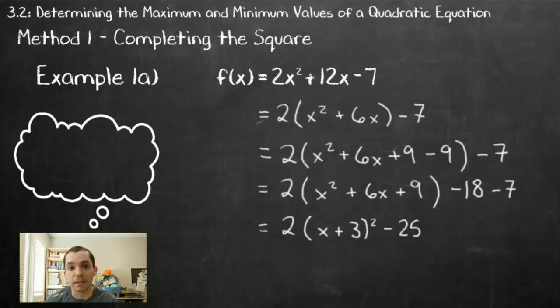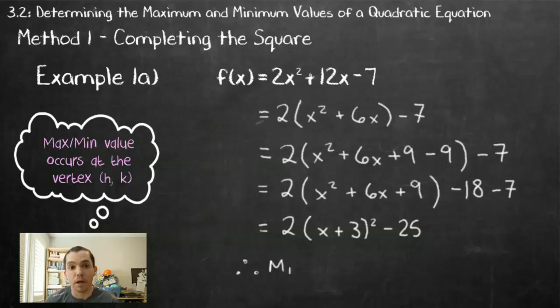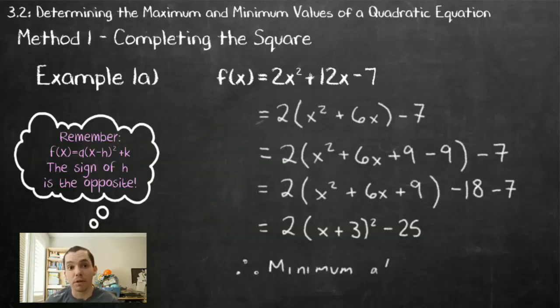My last step is to decide, is this a maximum or a minimum? In order to determine that, we use the a value. a is greater than 0, it's positive, so we're going to have a minimum value as our parabola opens up. My minimum is going to occur at the vertex, and I use my h and k value to get the point negative 3, negative 25.